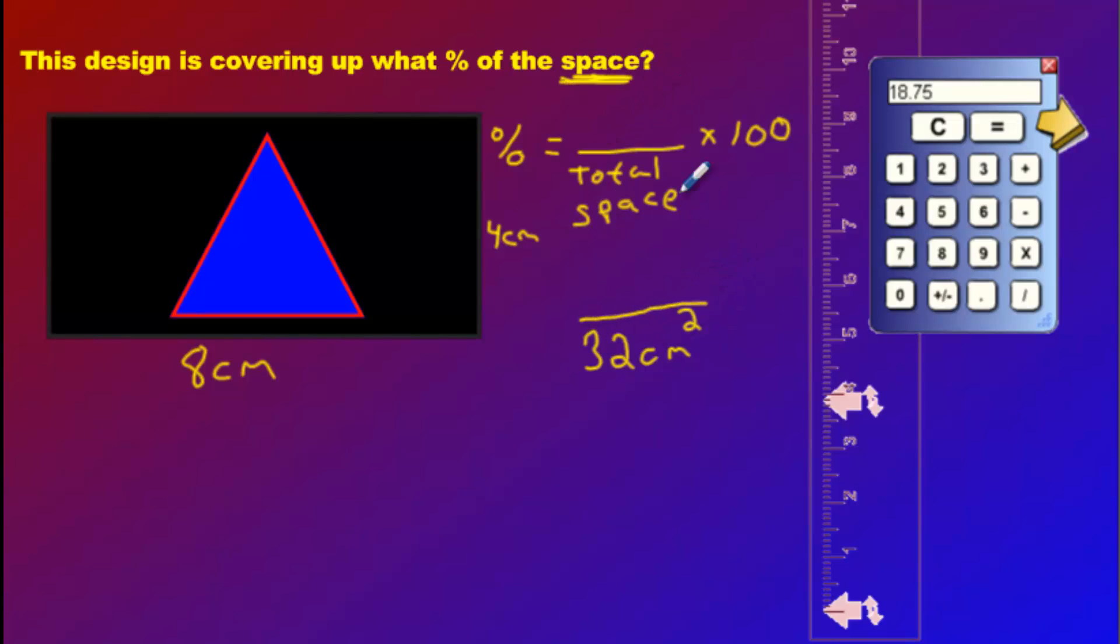That's my denominator. My numerator is going to be whatever I'm talking about. What am I talking about here? It's the design. I'm talking about this design. That is my topic. Now, how do you find the area of a, what is that? A triangle.